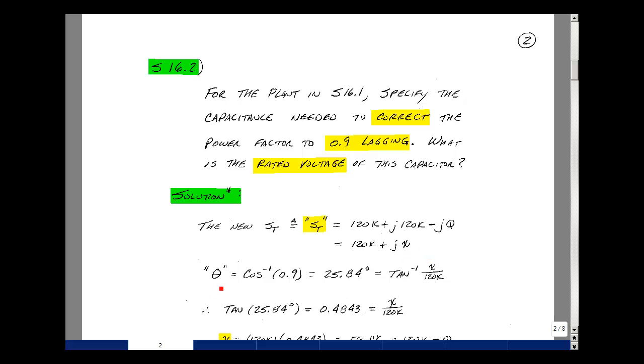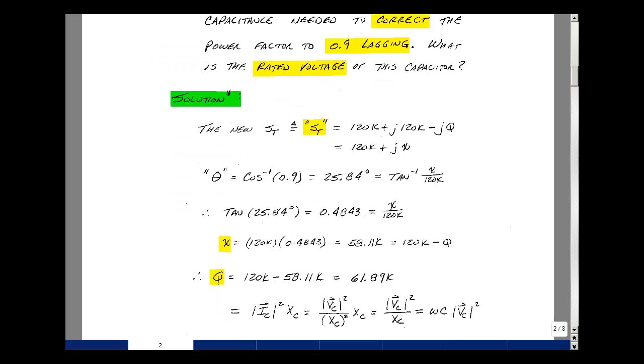So the value of theta for our new value of complex power is the inverse cosine of 0.9 and that's 25.84 degrees. But that's going to be the arctangent of the imaginary over the real because that's the angle of the complex power. I take the tangent of both sides of the equation. So the tangent of 25.84 is 0.4843. And then the tangent of the arctangent is just the argument, which is X over 120k.